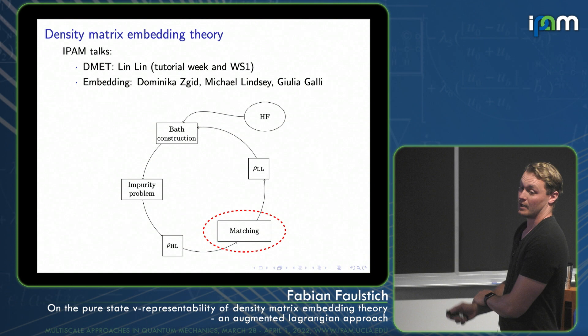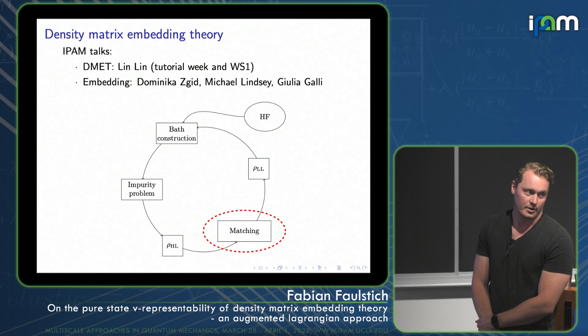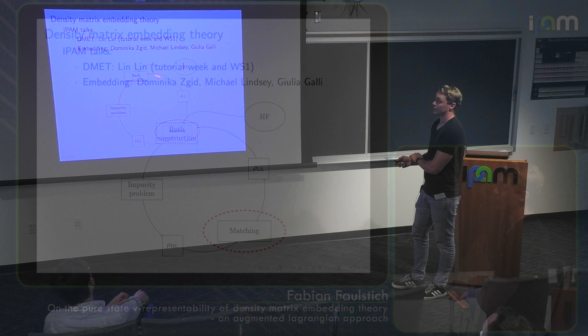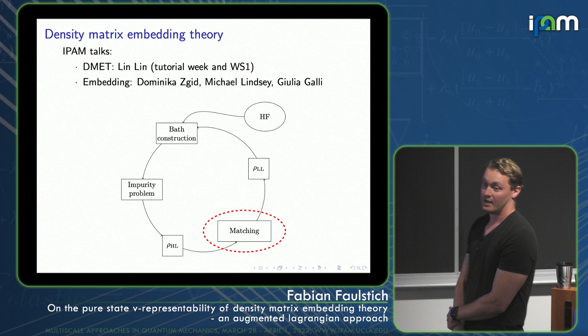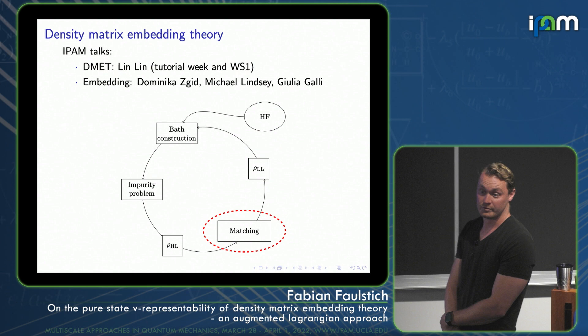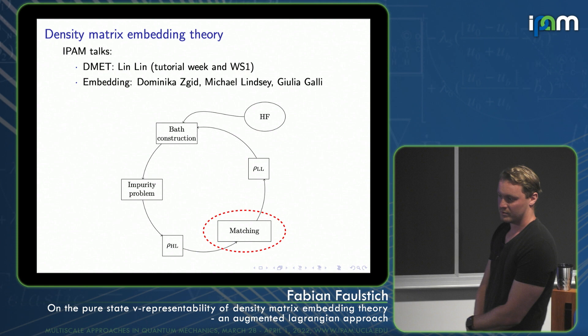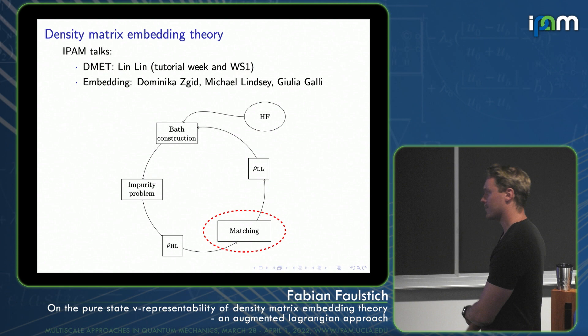We have a Hartree-Fock calculation at the global level, and we obtain a density matrix — the one-particle reduced density matrix (1RDM) — from this. This 1RDM goes into a black box called the bath construction, which yields bath orbitals for each individual fragment. Fragment plus bath defines our impurity problem for each fragment. These impurity problems we then solve with a high-level solver — this can be full CI, DMRG, coupled cluster singles and doubles, or whatever your preferred high-level solver is. What you get out is a high-level solution, and you can compute so-called high-level density matrices. These are local quantities, of size 2L_A by 2L_A, where L_A is the size of your fragment.